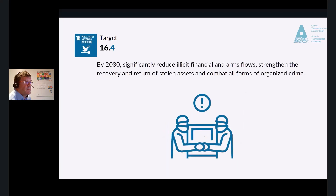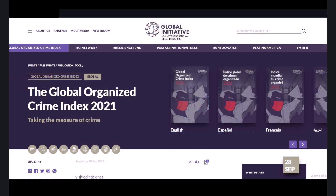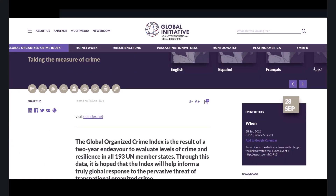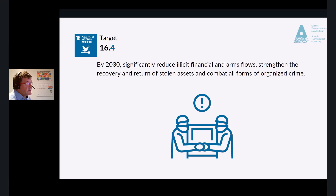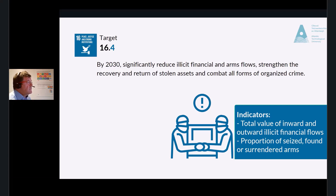Target 16.4: By 2030, significantly reduce illicit financial and arms flows, strengthen the recovery and return of stolen assets, and combat all forms of organized crime. There is an index called the Organized Crime Index — you can look it up on ocindex.net. Have a look at Ireland; you might be surprised. The indicators are the total value of inward and outward illicit financial flows in dollars, and the proportion of seized, found or surrendered arms whose illicit origin or context has been traced or established by a competent authority.